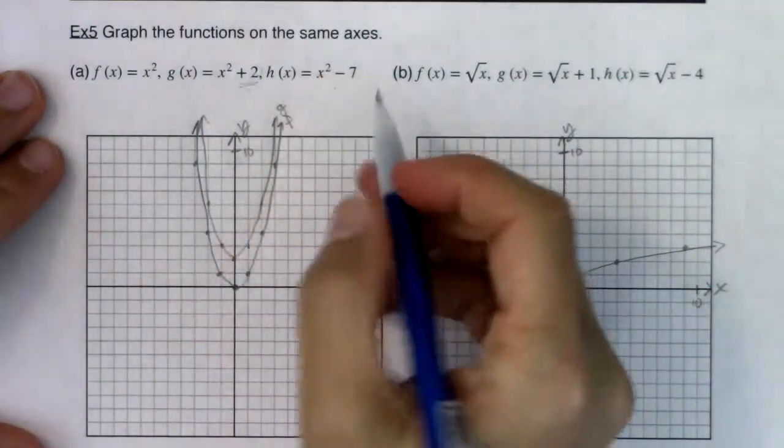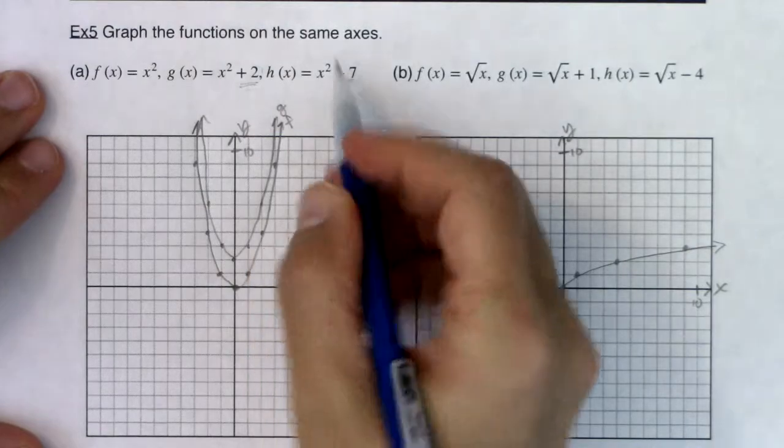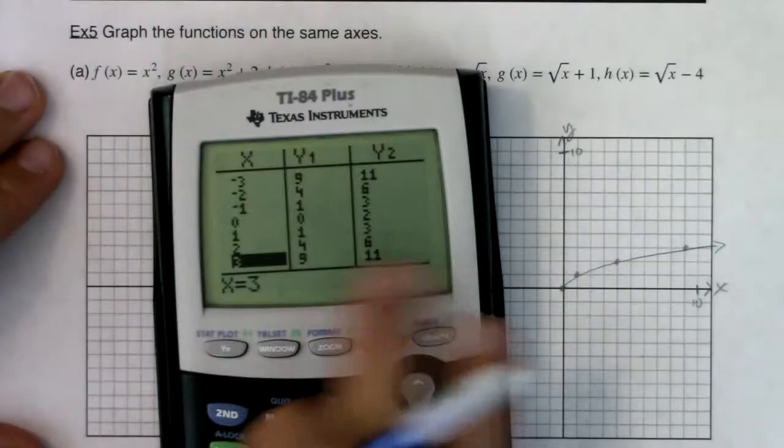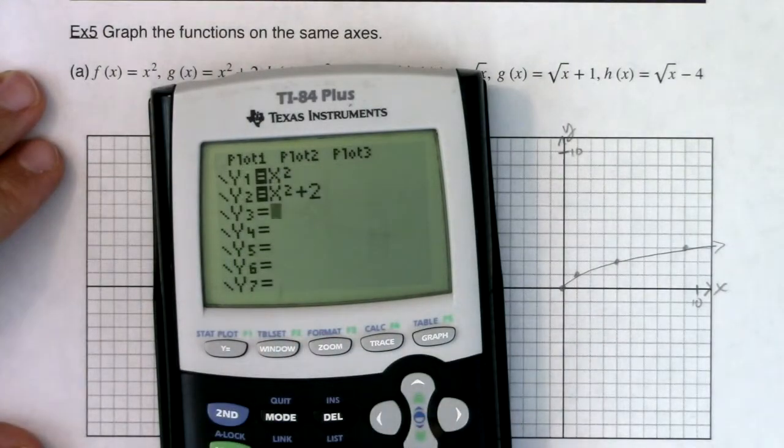Okay. Now I want you to see that I have a minus seven. So try and get ahead of me. Where do you think this original parabola is about to shift? Well, let's find out. I'm going to do x squared minus seven.